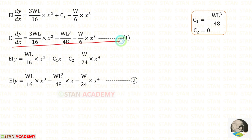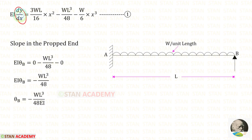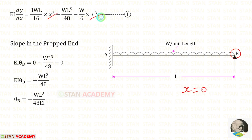Now, using the slope equation, let us find the slope at the propped end B. Since dy/dx is slope, and at point B the value of x = 0, substituting x = 0 into the slope equation gives EI·θB = −WL³/48. Therefore, the slope at B is θB = −WL³/(48EI).